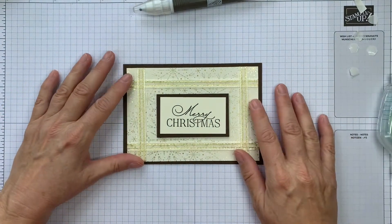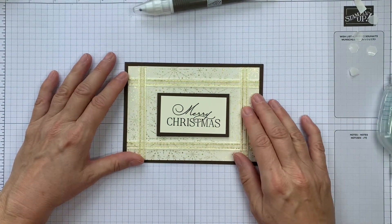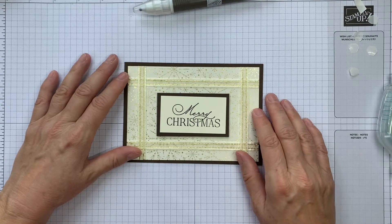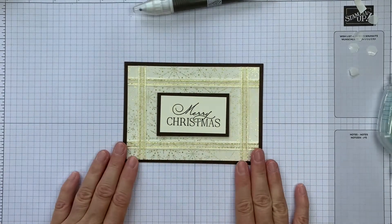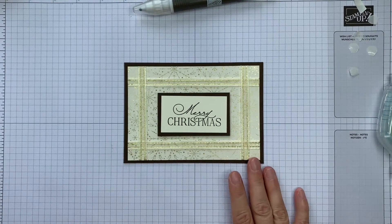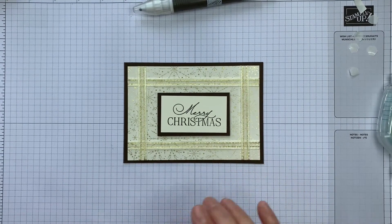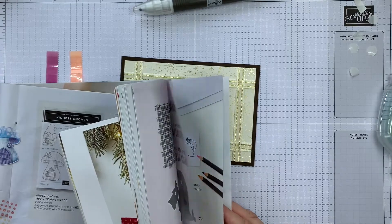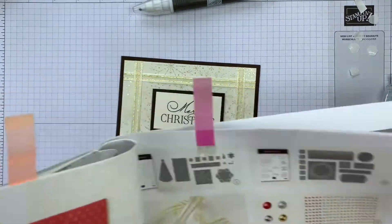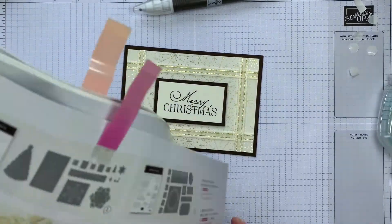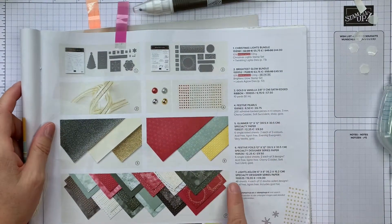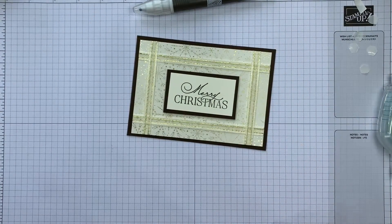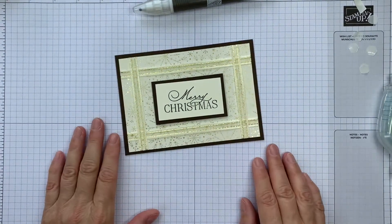So have a little look in your stash. See what ribbon you've got. See what DSP you've got that go together. This works particularly well, like I say. This is from the Lights Aglow set. The Lights Aglow Suite, should I say. So let me go back to that. So we're using the Lights Aglow DSP and the Golden Vanilla Satin Edge Ribbon. And that gives us our card.